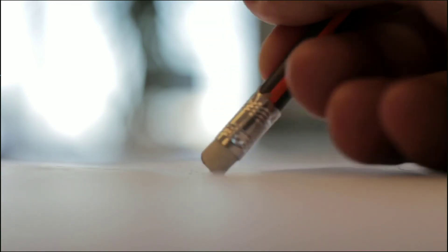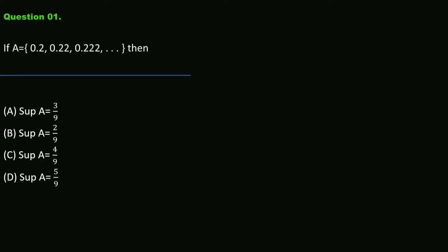Hello friends, in this video I explain the solution of CPET 2021 mathematics questions. Question one: if A is a set containing the elements 0.2, 0.22, 0.222, 0.2222, and so on, then we have to find what is the supremum value of the set A.